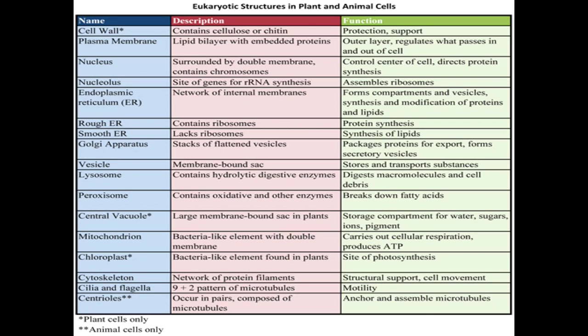The endoplasmic reticulum is a network of internal membranes. It forms compartments and vesicles and is responsible for synthesis and modification of proteins and lipids. The rough ER contains ribosomes and that's where proteins are made; the smooth ER lacks ribosomes and that's where lipids are made. The Golgi apparatus is stacks of flattened vesicles; it packages proteins for export and forms secretory vesicles.